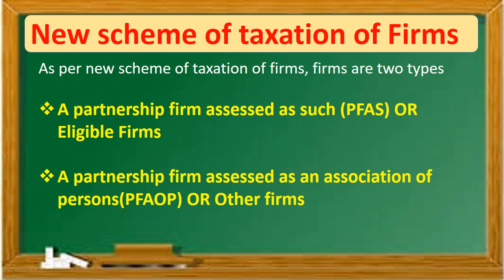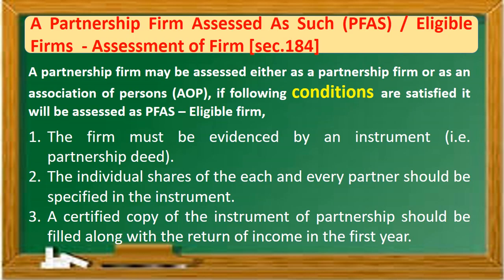Scheme of taxation of a firm — new scheme, assessment of firm. A partnership firm assessed as such — that is, eligible firms. A partnership firm assessed as an association of persons — AOP — and other firms. A partnership firm assessed as such means it is an eligible firm.